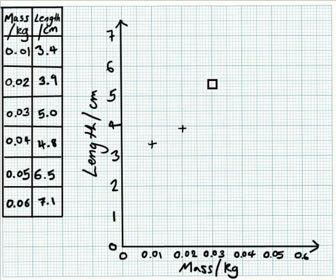For 0.03, I need to get it exactly on 5. There we go. 0.04 is 4.8, so just a little bit lower. There it is. 0.05 is 6.5. That's just about close enough. And 0.6 is 7.1. You have to get your points to the nearest millimeter to get the mark for plotting the points in your ISA.